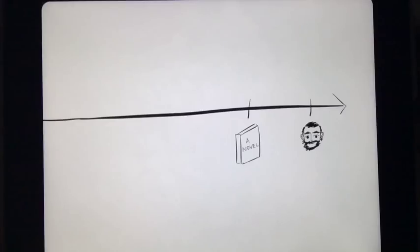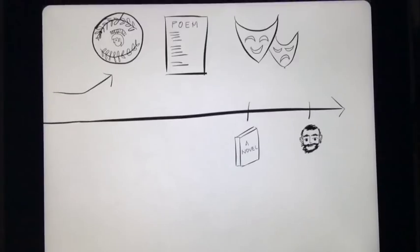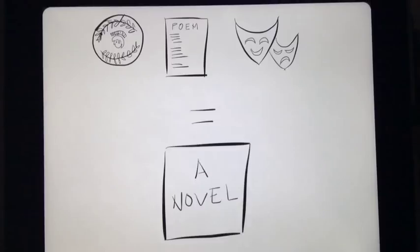At the time, the novel was a relatively new form of writing, having only been in existence for a couple of centuries where, by comparison, forms such as the epic, the poem, and the play had already been in existence for thousands of years. Because of this, literary critics would analyze novels in the same way they would these art forms.